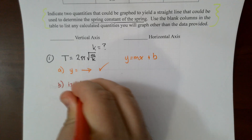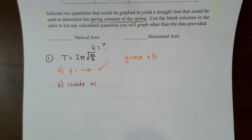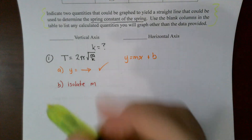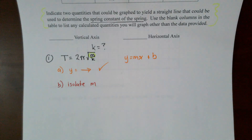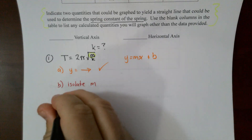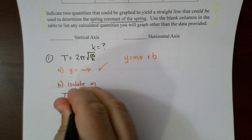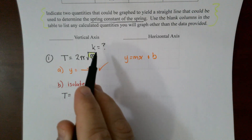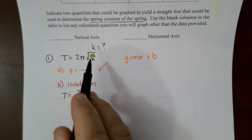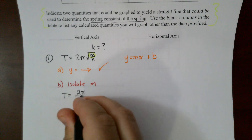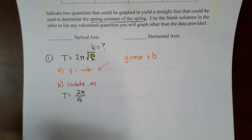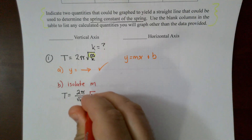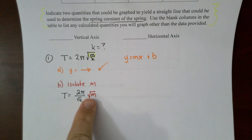Step two is to see if the second variable — in this case m — is isolated on the other side. I'm going to rewrite the equation so that m is isolated. That means writing T = (2π / √k) × √m, essentially grouping everything that is not m in a single spot, then multiplying by √m.